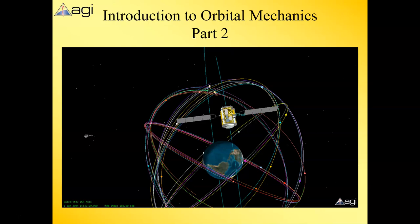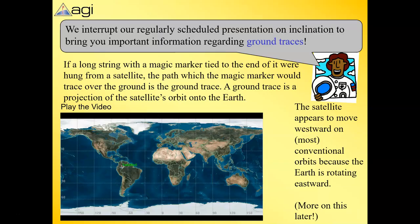At the end of part one, we were looking at inclinations. Let's stop for a second and do an aside. There's something called a ground trace, and you've probably seen these before. Here in our map, we have a little satellite that's just over South America.